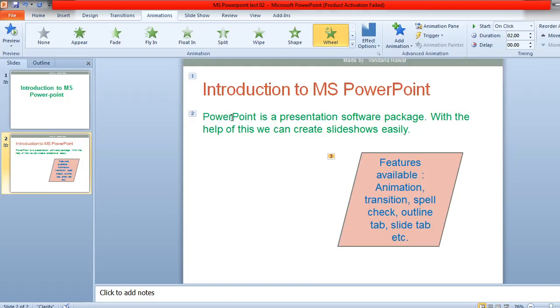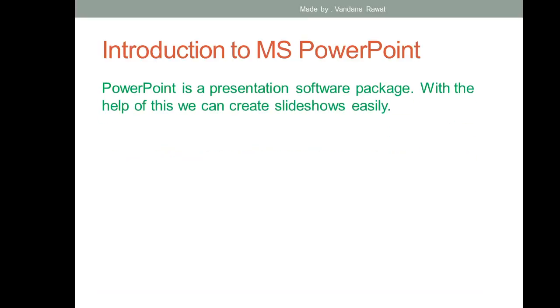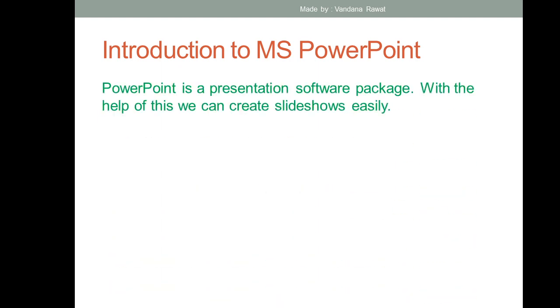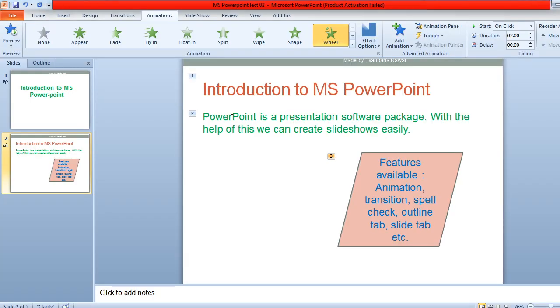After applying animations, save the file by pressing Ctrl+S or by going to File menu and clicking Save. When you press F5, the slides will appear one by one with animations. This is the correct way to present your slideshow.